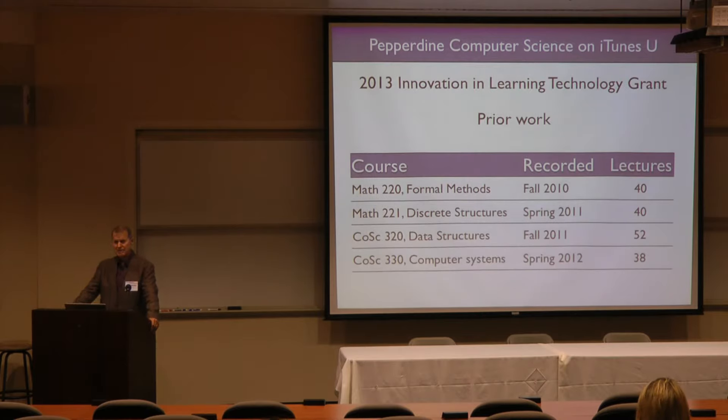Before I received the grant, I had actually done quite a bit of work on my own. Back in 2010, I was motivated to put my first course up on iTunes U — a math class called Formal Methods. I had a female athlete, a woman student on the women's volleyball team, whose practice schedule conflicted with my class. She wanted to major in computer science, and if she couldn't take the courses because of class conflicts, she couldn't do it. So I actually started that first class with her as my motivation, and it worked pretty well.